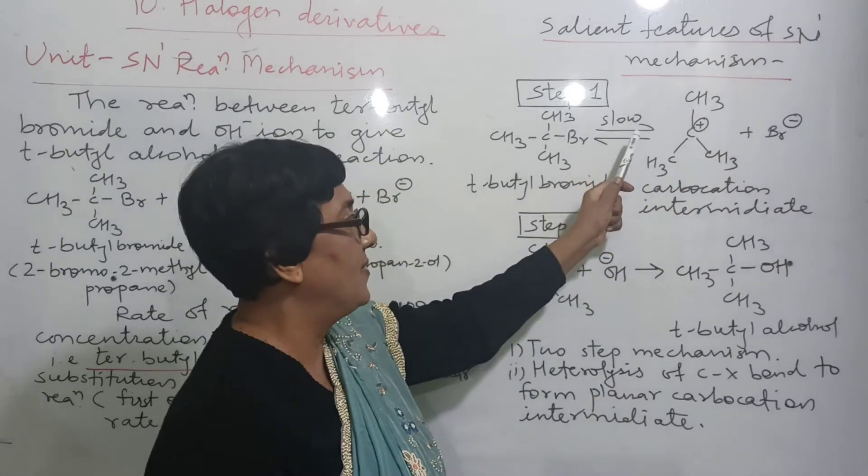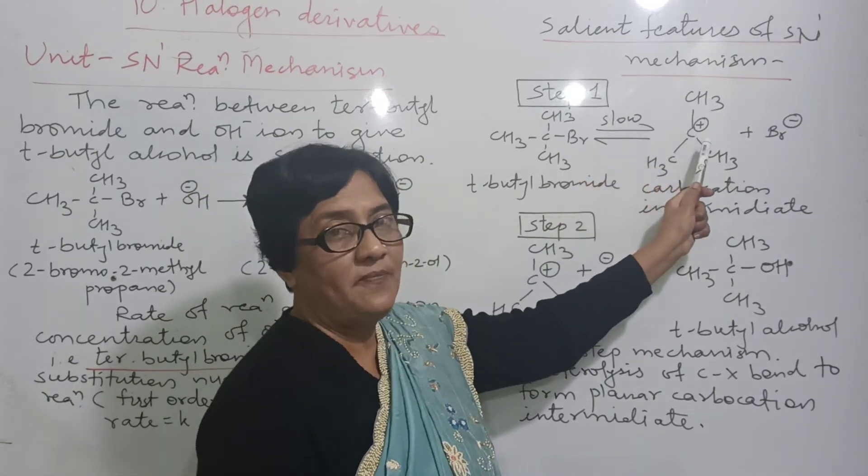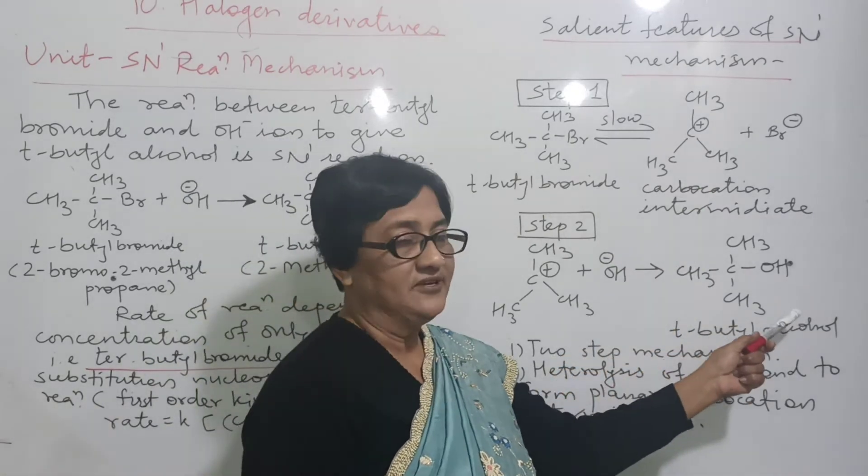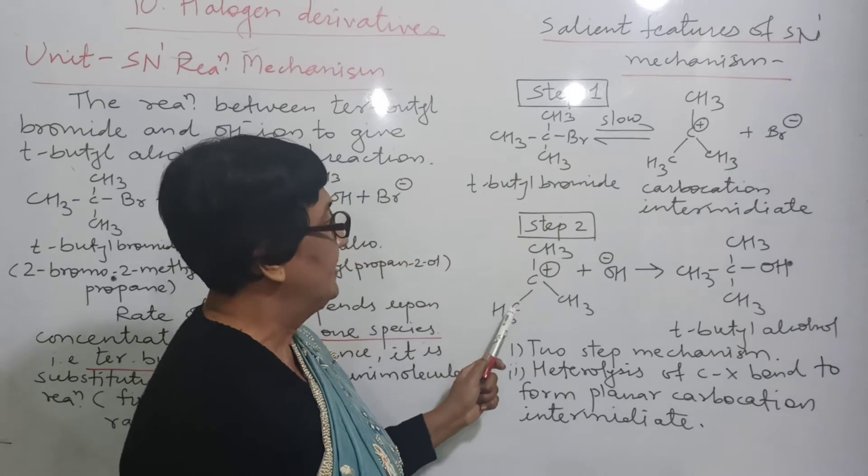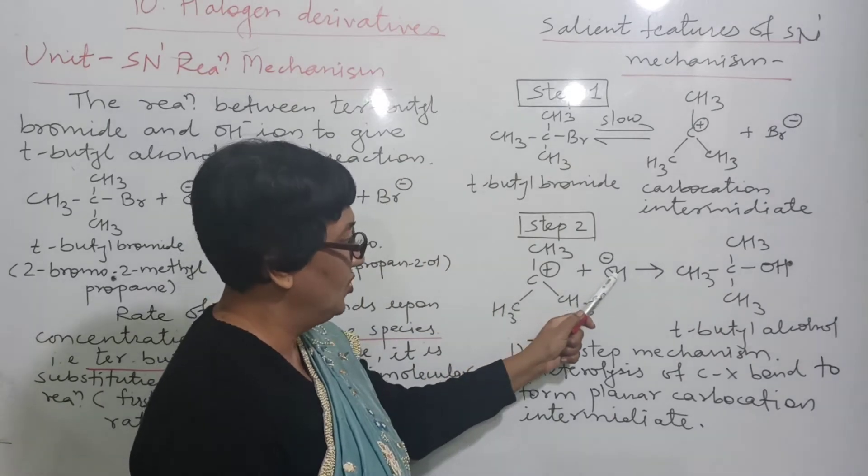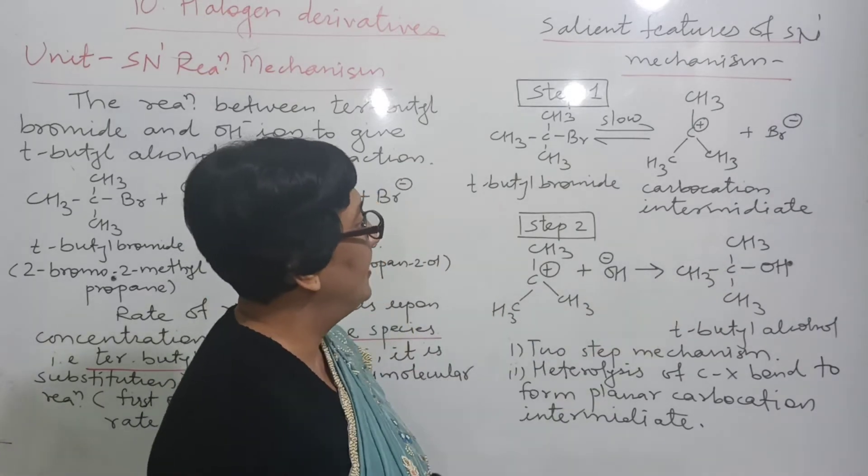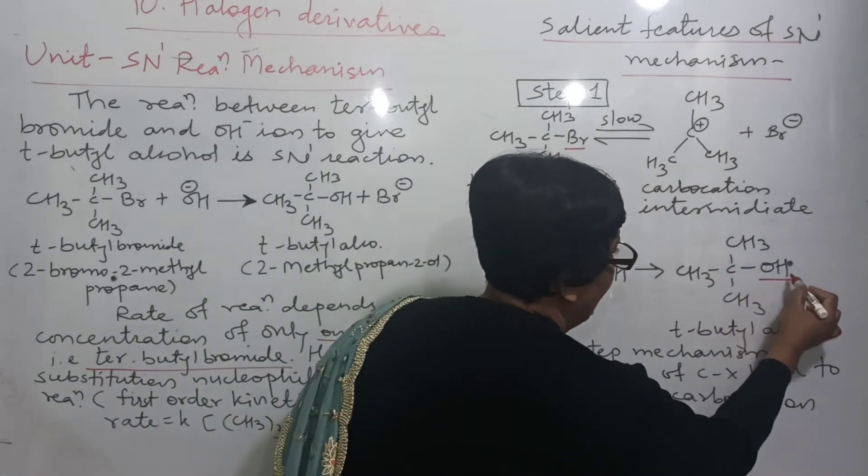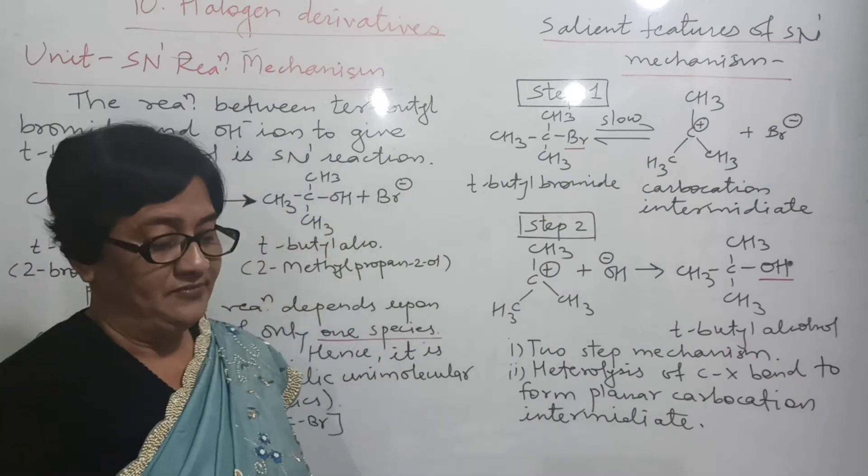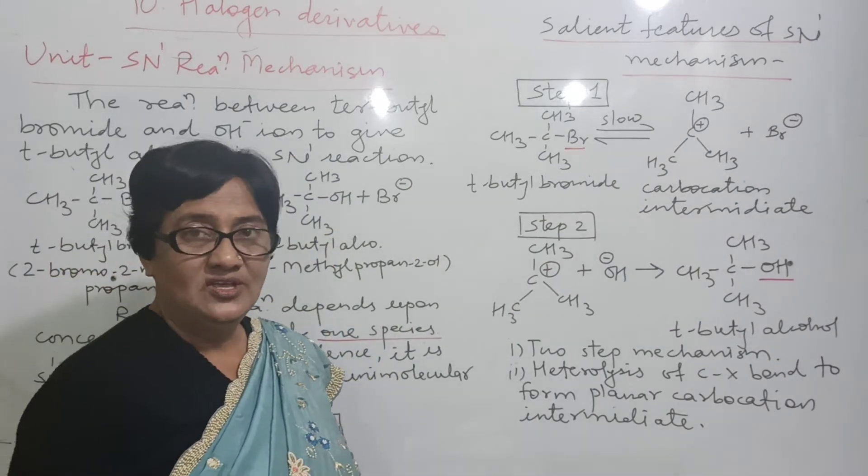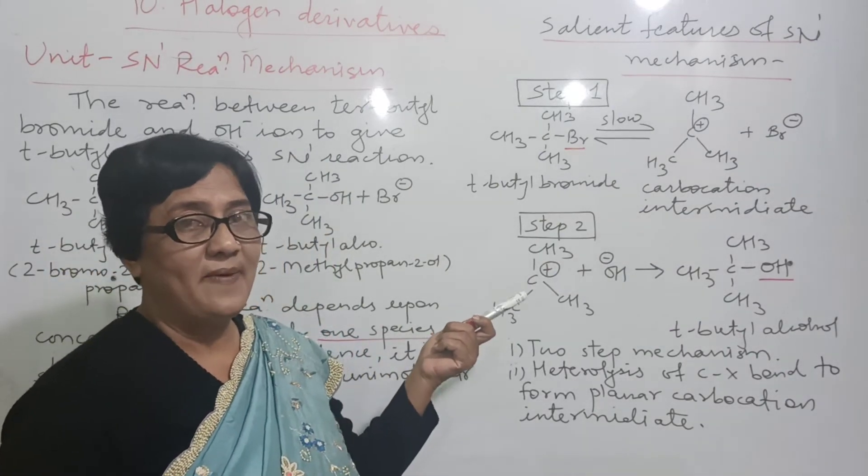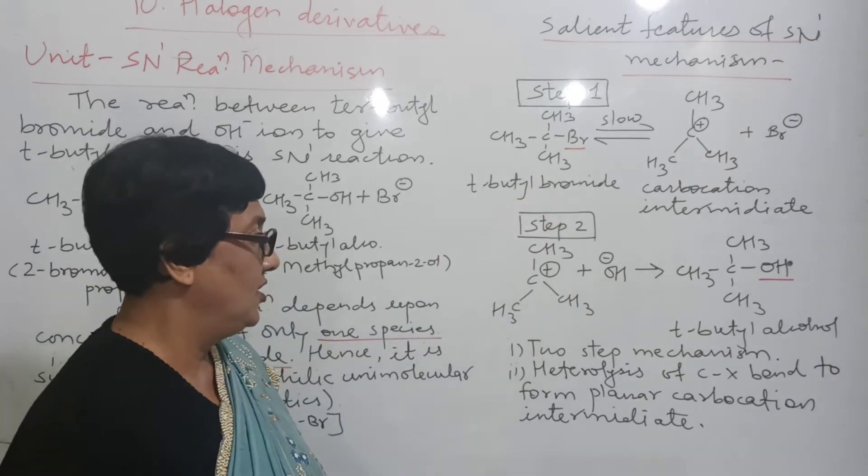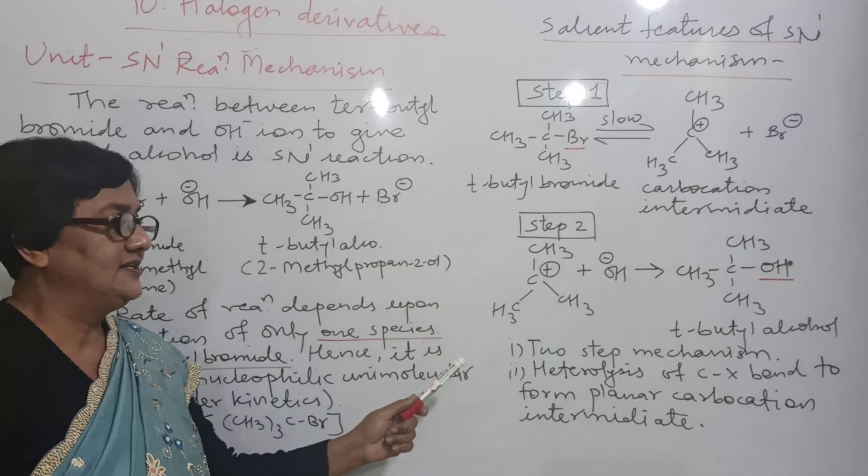Once this intermediate is formed, the second step is fast step. And immediately, the tertiary butyl alcohol is formed. So, here carbocation plus nucleophile OH. And here, you have to observe this carefully. Br and OH are from the same side. And in case of SN2, the backside attack. Here, no backside attack. Br and OH are on the same side. So, all these points we are going to write in the salient features.